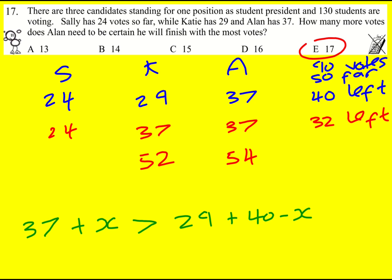So I've constructed an inequality and again this hinges on forgetting about Sally. She's the nearest challenger so we're imagining her getting most of the rest of the votes. Alan just needs to beat her because if he beats her he's guaranteed to beat Sally as well.